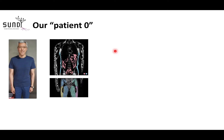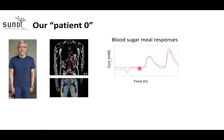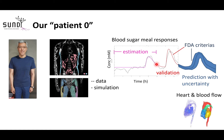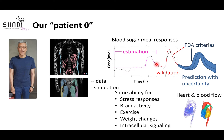Moving to personalization: our first digital twin captures fat deposits, muscle deposits, and glucose responses. We are collecting time series responses to meals, exercise, and other interventions, comparing data and simulations. Even for one person, we subdivide the data — training on the breakfast blood sugar response, then predicting what happens at lunch. This approach extends to heart and blood flow, stress responses, brain activity, exercise, and more.